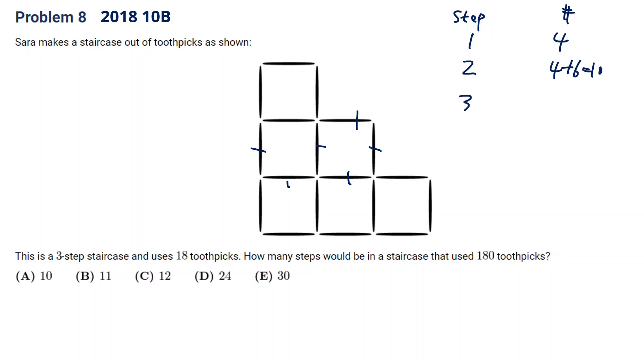And the next, for 3 steps, we're going to have extra 8 toothpicks. So 10 plus 8 is 18. This is how we get 18. So the question is how many steps we need to get 180.